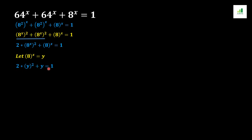We rearrange this equation: 2y squared plus y, and this 1 moves to the other side and becomes minus 1, giving us 2y squared plus y minus 1 equals 0. We can see that this is a quadratic equation that can be factorized.